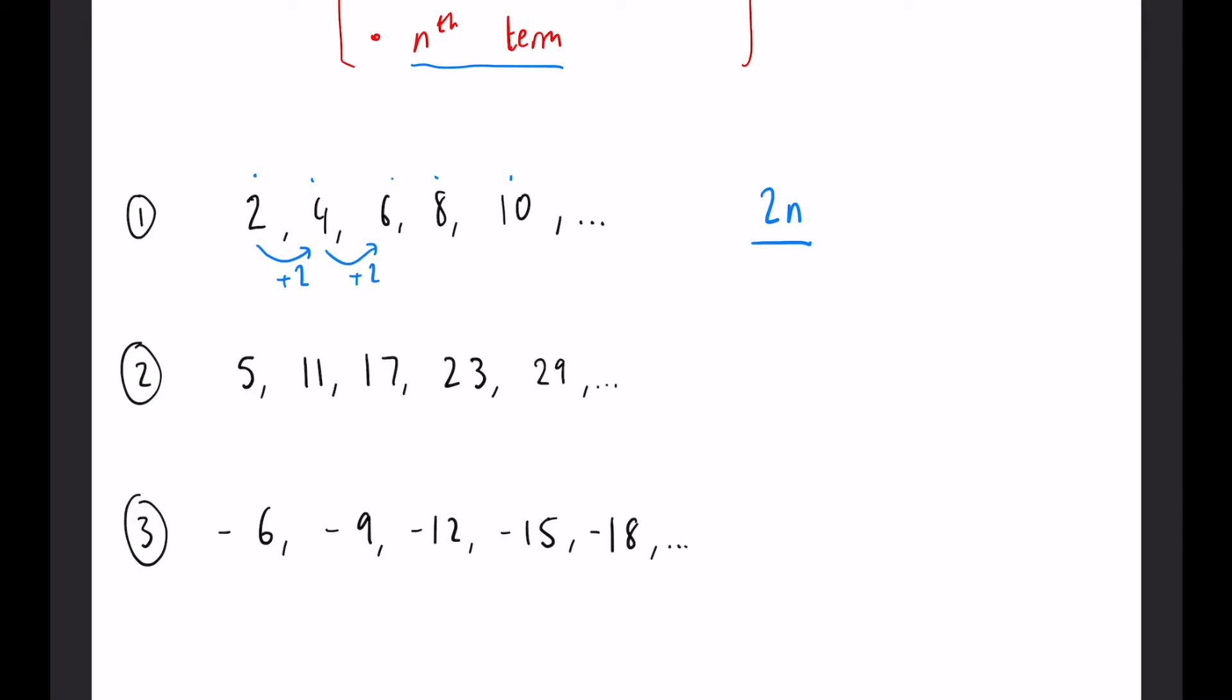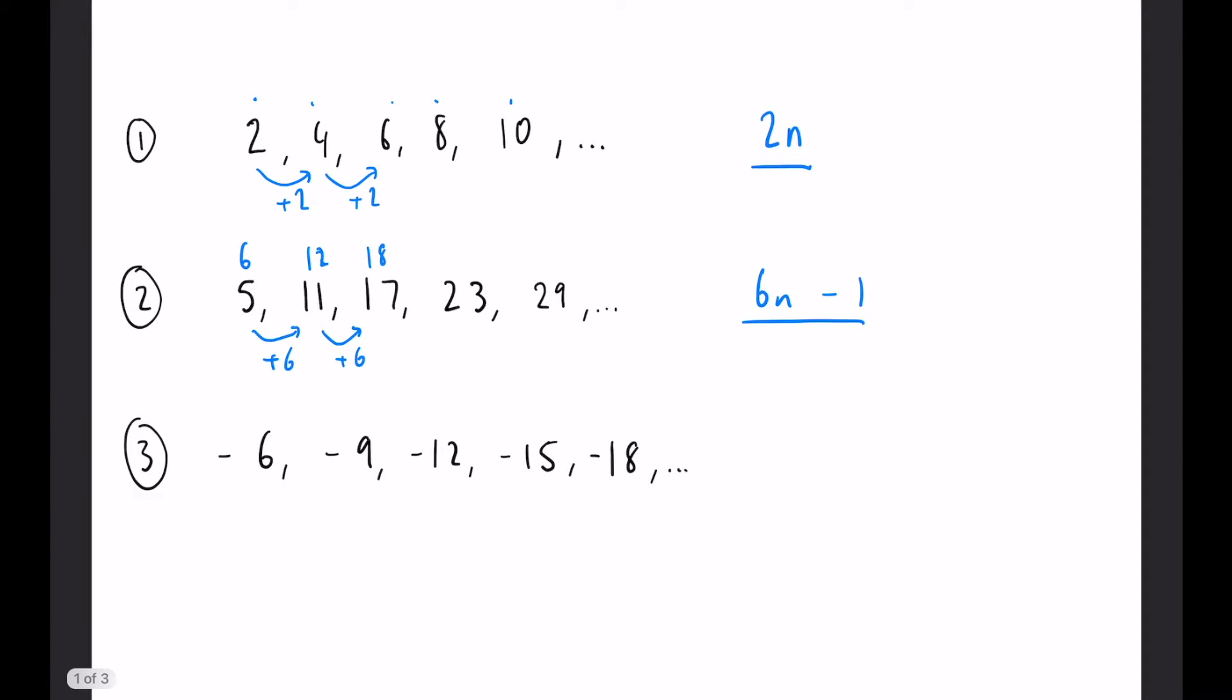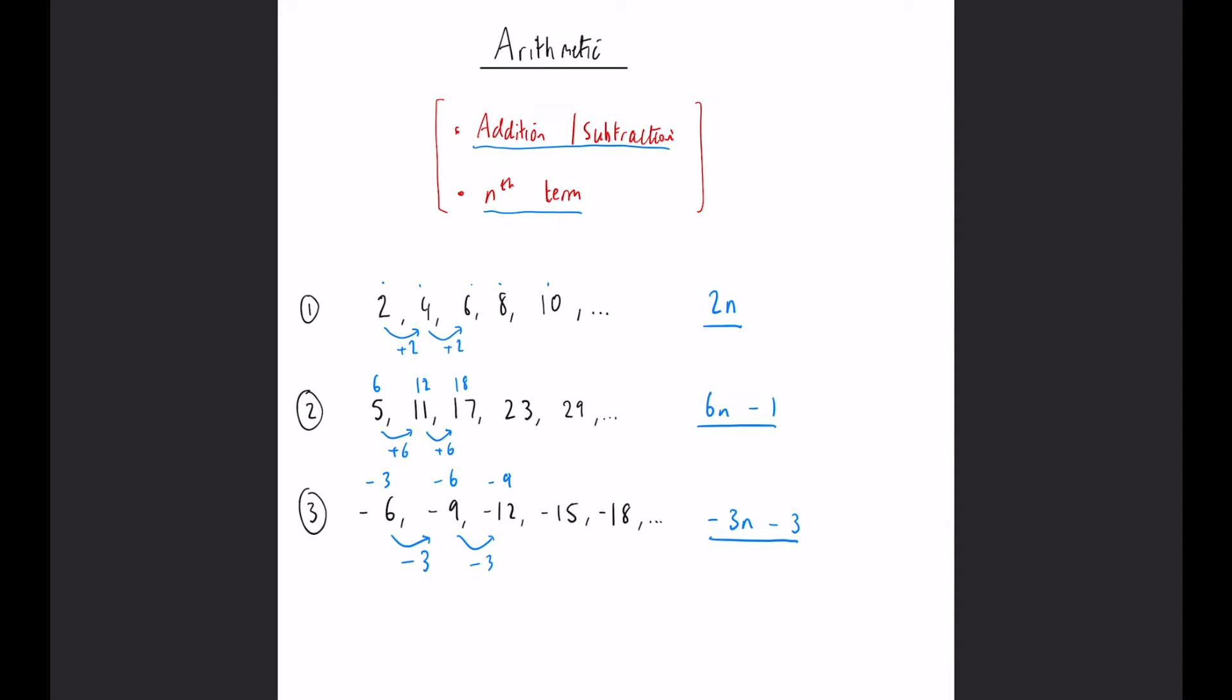Our second example, this time we're adding 6 between each term, so it's going to be 6n. However, if you write 6n above it, you can see that for the first three terms, the sequence itself is 1 less every time than the 6 times table, so it's 6n minus 1. And finally, this time we are going down by 3, so we have minus 3n. If you write the minus 3 times table above it, you can see it is 3 less than the 3 times table every time, so it's minus 3n minus 3. That's the most common type of sequence, which I'm sure many of you have seen before.